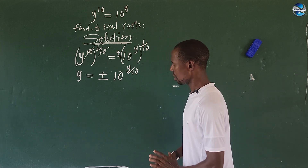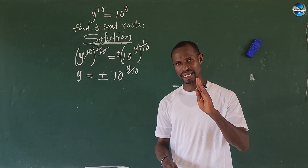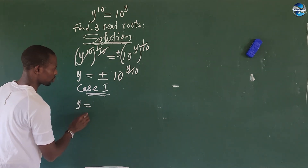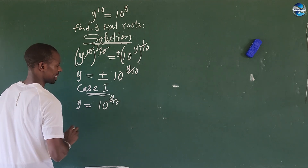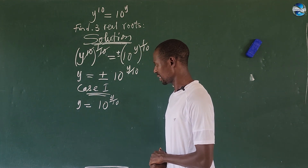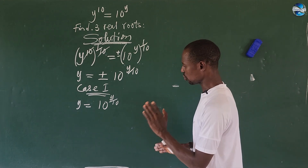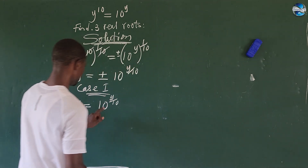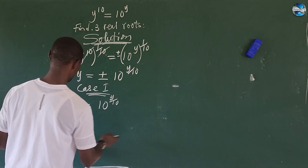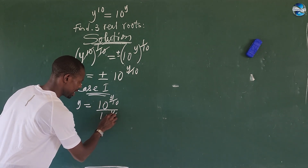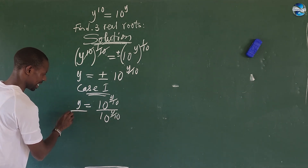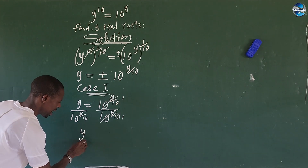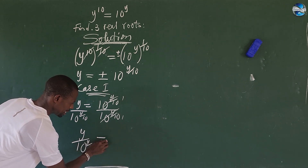We have two cases from this expression — the positive and the negative. Let's take Case 1, the positive case: y = 10^(y/10). To solve for y we'll use the Lambert W function. We need to manipulate the expression so we can invoke it. To do that, let's make the right-hand side equal to unity by dividing through by 10^(y/10). This gives us y divided by 10^(y/10) equals 1, or equivalently (y/10) · (10^(y/10))^(−1) = 1... let me write it as y/10 over 10^(y/10) = 1.